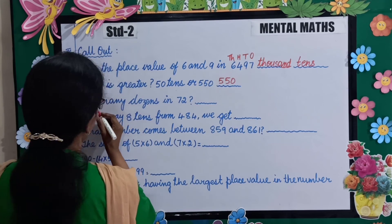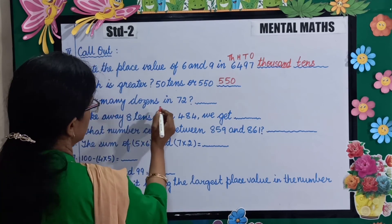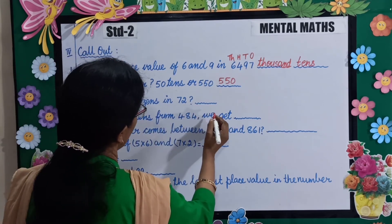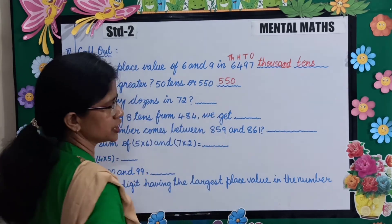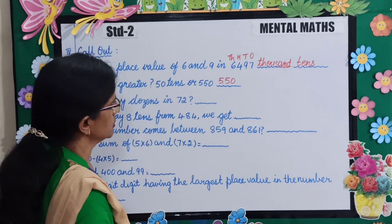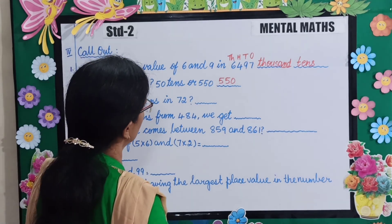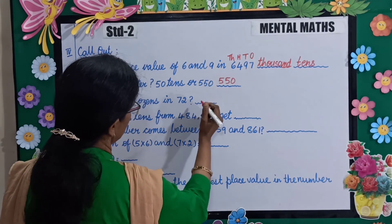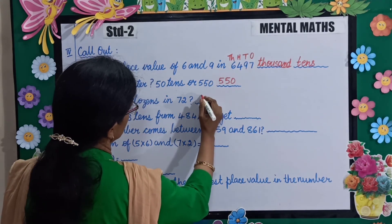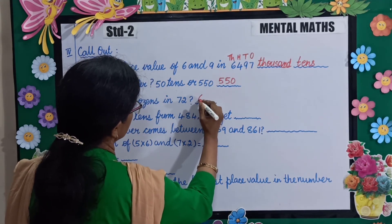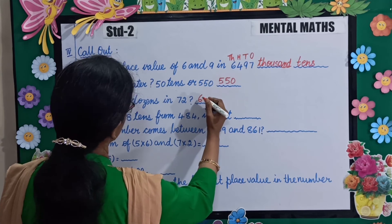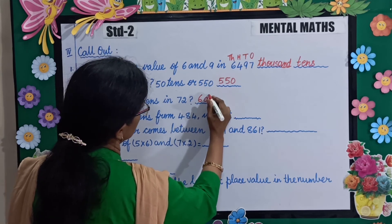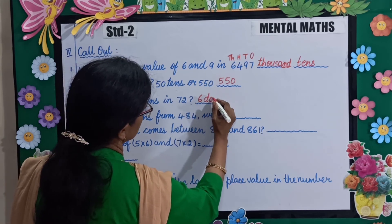Next: how many dozens in 72? One dozen is equal to 12. So how many dozens make 72? 12 times 6 are 72. So the answer is 6 dozens.